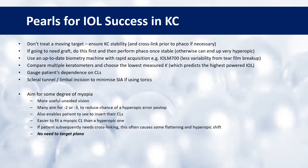We should really aim for some degree of myopia with these patients. I normally target emmetropia with most of my normal patients, but this is one exception where myopia is more useful. Firstly, you get more useful unaided vision with a degree of myopia. Many surgeons will aim for minus 2 or minus 3 to reduce the chance of a hyperopic surprise due to the unpredictability of lens calculations. If the patient does end up myopic, it actually helps them to see to insert their contact lenses, and it's easier to fit a myopic contact lens than a hyperopic one. Also, if the patient subsequently needs cross-linking, that procedure often causes some flattening and a hyperopic shift. The bottom line is there's no need to target plano in these eyes — and above all, manage patient expectations.